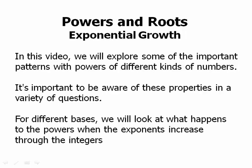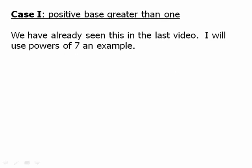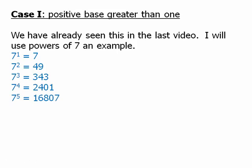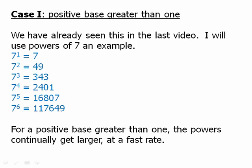For different bases, we will look at what happens to the powers when the exponents increase through the integers. Case one: a positive base greater than one. I'll use powers of seven as an example. Seven to the one is seven, seven squared is 49, seven cubed is 343 — that's a good number to know. As we get to higher powers of seven, these are not numbers you need to know; I'm showing them only to emphasize that exponential growth gets very big very quickly. The big idea: with a positive base greater than one, the powers continually get larger at a faster and faster rate.